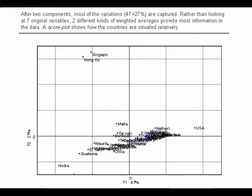Here we have the results of doing a PCA on the demographic data. First, we show only the score values, so we have a score plot. On the axis, you can see how well these two scores describe the data. In this case, we are explaining 74% of the data, so that's quite good for data like this. That means that any interpretation we make in terms of this plot will be descriptive for 74% of the variation in the data.